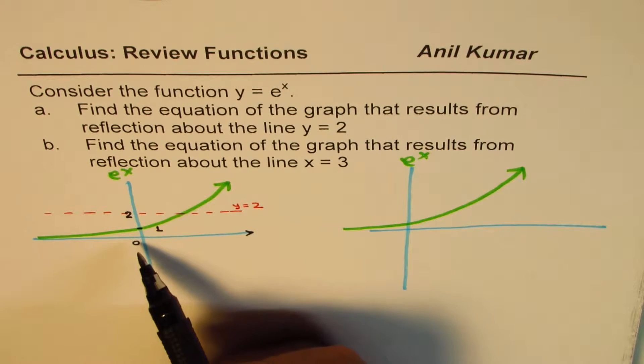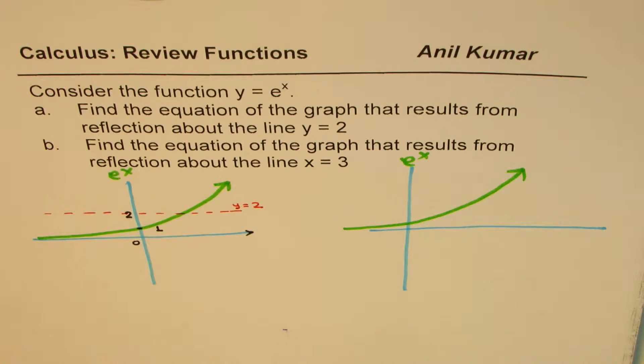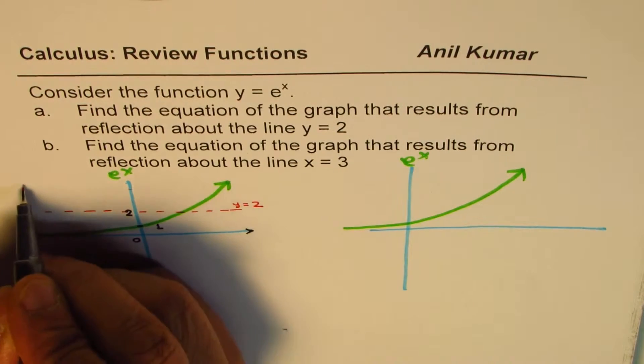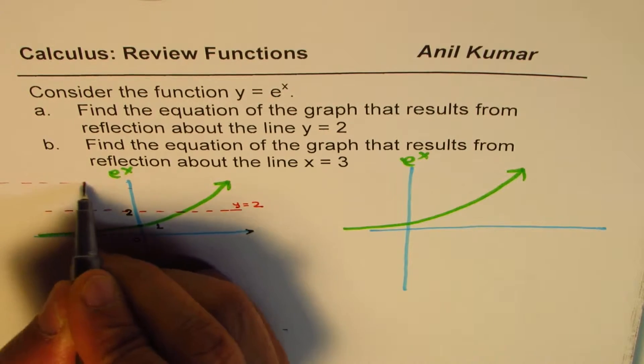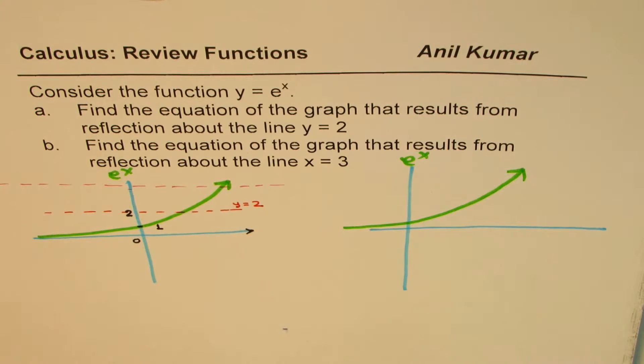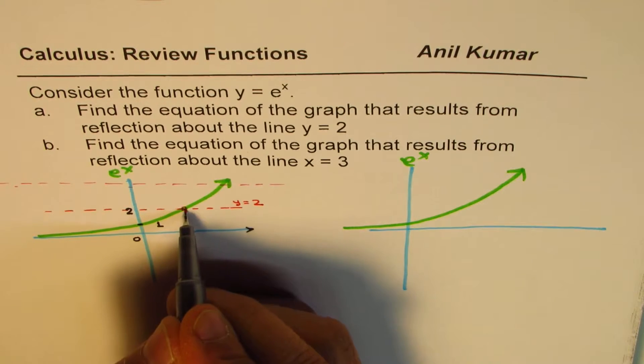Now, when I reflect about the line, which is y equals 2, this asymptote will actually be also reflected, and it will be 2 away, so it will be at 4. So let me draw this horizontal asymptote now for this graph. So what I will have here is this portion will be approaching this side.